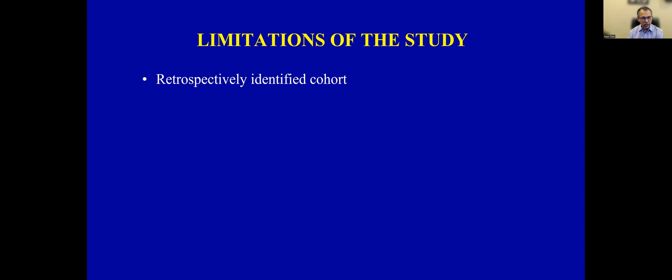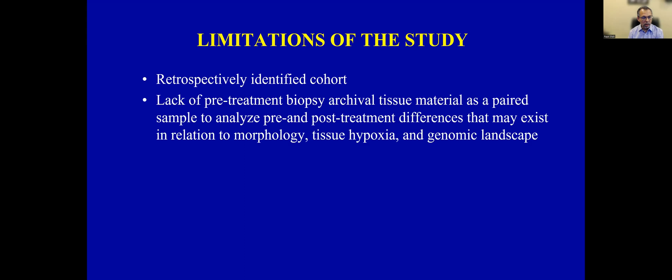Regarding limitations, this study is a retrospectively identified cohort, though all characteristics defined were prospectively defined. We also had a lack of pre-treatment biopsy archival tissue material as paired samples to analyze pre- and post-treatment differences in morphology, tissue hypoxia, and the genomic landscape. The pre-treatment information available was therefore somewhat indirect, based on reports rather than direct archival tissue material.